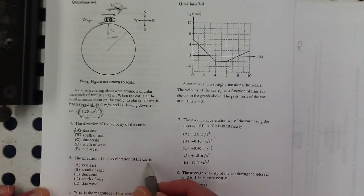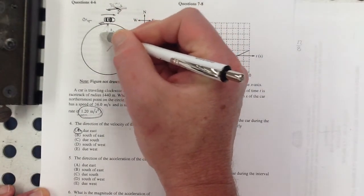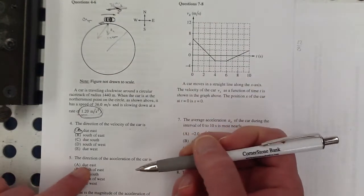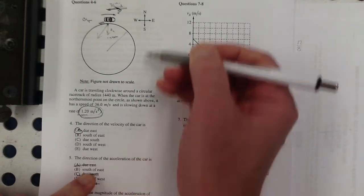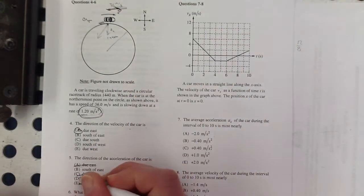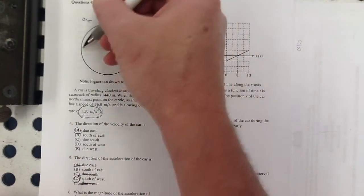The direction of the acceleration of the car, well, it's got these two components. So it's the direction of the acceleration is this, so that is, let's see, is that due east? No, it's not due anything. Is it south of east? No. Is it south of west? Yes, it's south of west, right, south of west, third quadrant.